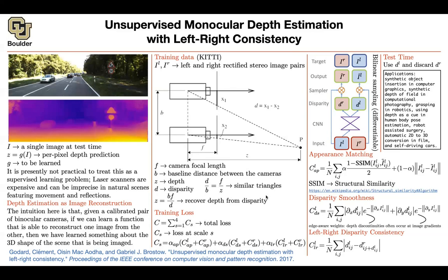Unlike the previous paper, here you're only working with your images — you don't need ground truth depth to supervise the algorithm, so it is self-supervising. However, you do need some additional information: the focal length of your camera, the baseline distance between your cameras, and pairs of images during training. Once you are testing, you only need one single image.